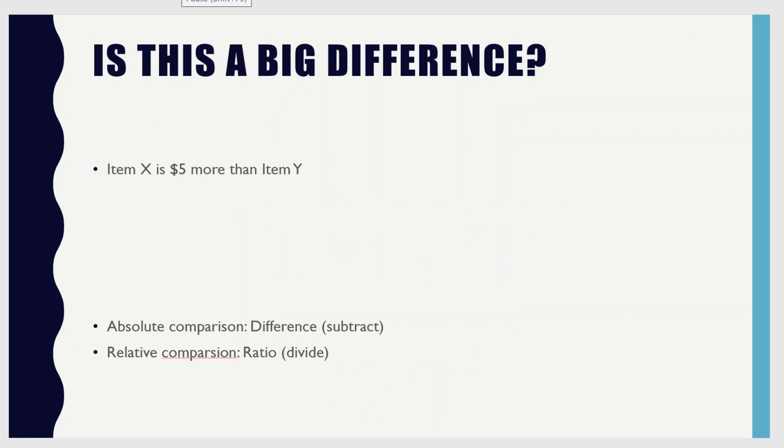Here's a question. Suppose you have two items and one of them costs five more dollars than the other item. Is this a big difference? Would this affect your decision on which item to buy? The answer really depends on what the scale is. If this were a notebook or a salad, five dollars would be a big difference. But if you're talking about a car, then five dollars is not a big difference at all. And so this is where proportions come in.